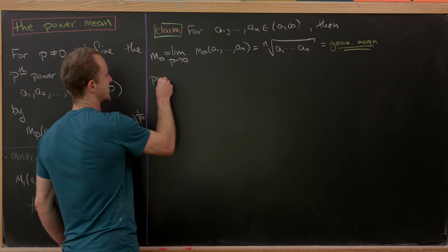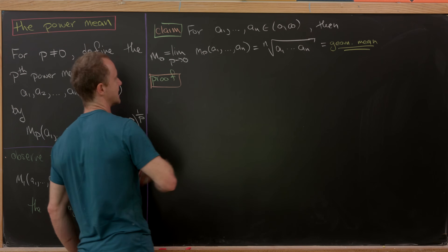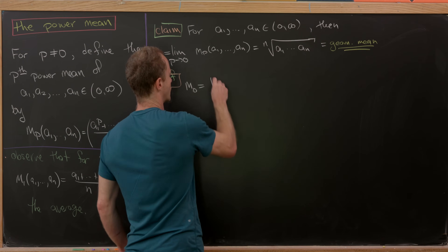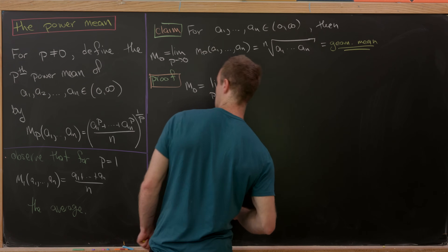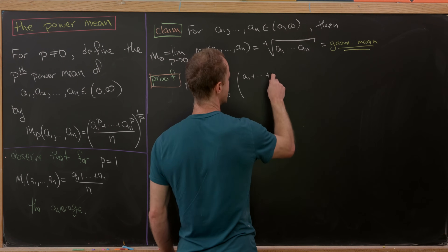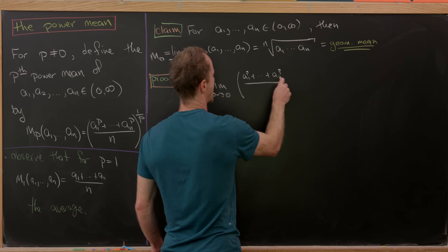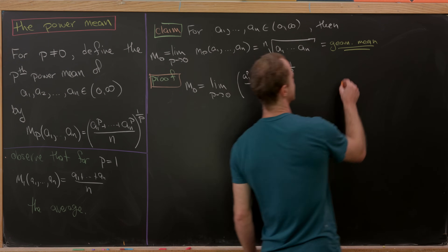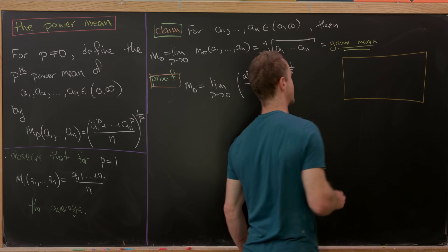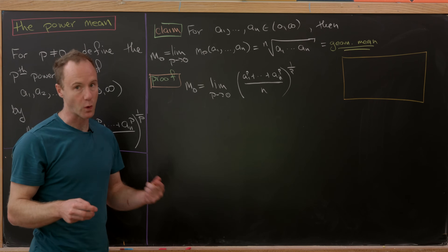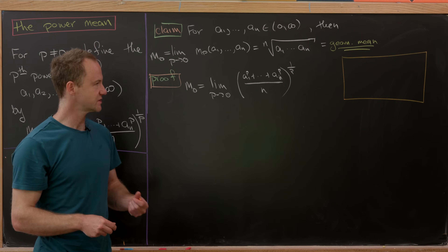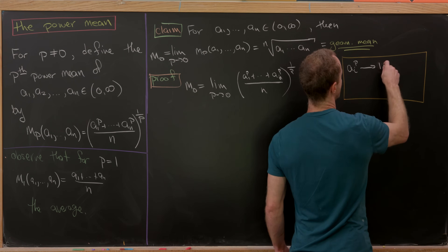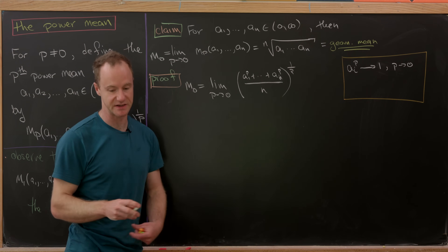To evaluate this, we write m₀ as the limit as p goes to zero of ((a₁^p + ... + aₙ^p)/n)^(1/p). Unsurprisingly this is an indeterminate form — if it weren't, we could define it without a limit. Since each aᵢ^p approaches 1 as p→0 (anything to the zeroth power is 1), and 1/p approaches infinity, we have a 1^∞ type, which is an exponential indeterminate form.